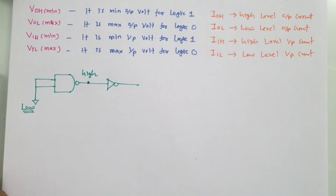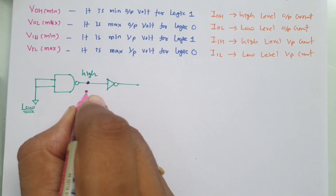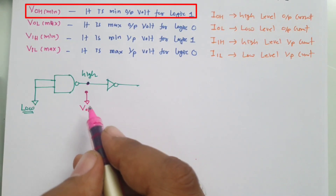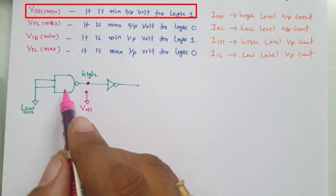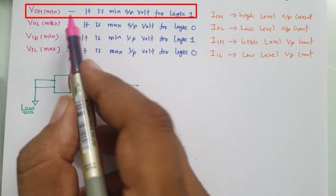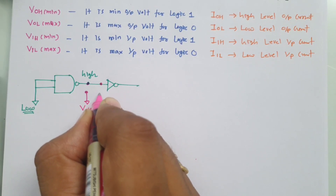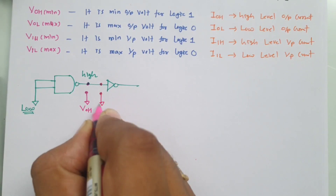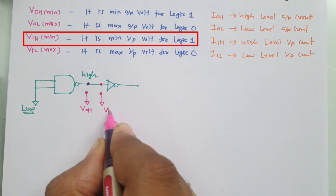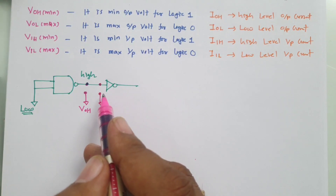As the output is logic high, the voltage at output must be VOH minimum — otherwise the circuit cannot function properly. It should be at minimum VOH. The voltage given to the input of the NOT gate must be at minimum VIH. So if the output is at minimum VOH, this NOT gate can function properly, and the signal transition will happen at this end.